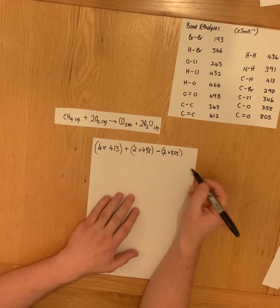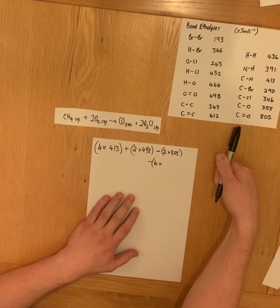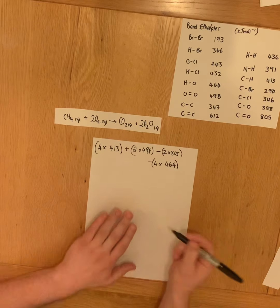And we've got four lots of O-H bonds, four moles of O-H bonds.